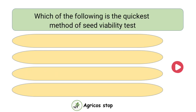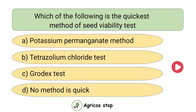Which of the following is the quickest method of seed viability test? Options are potassium permanganate method, tetrazolium chloride test, Grodex test, and no method is quick. The answer is Grodex test. Grodex test is the quickest method of seed viability test.